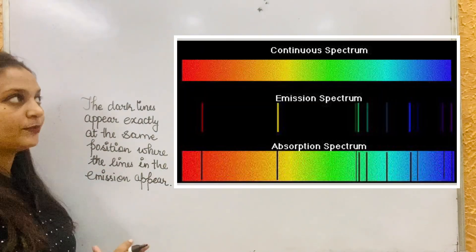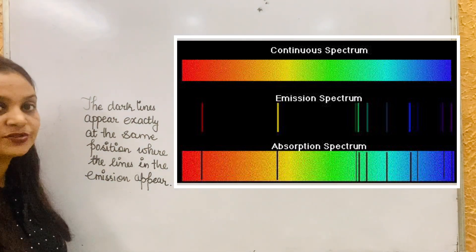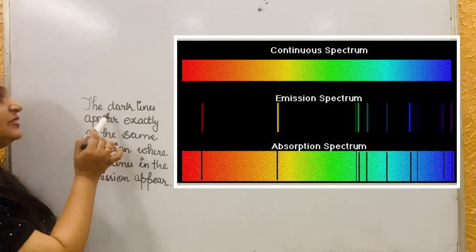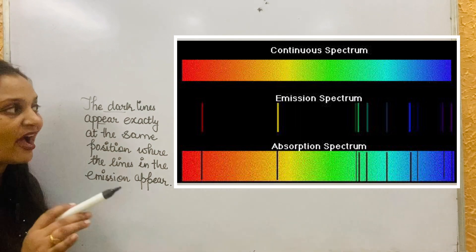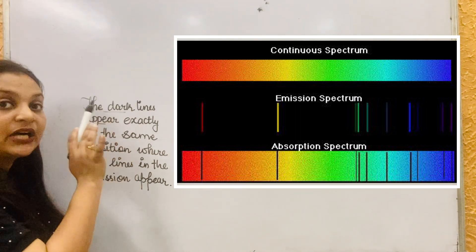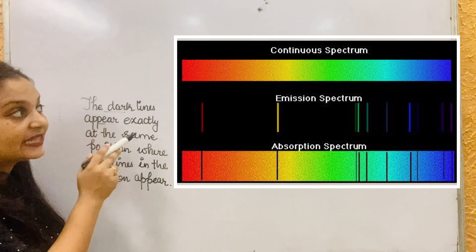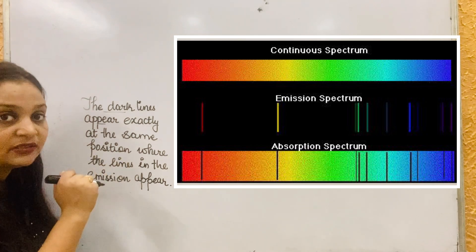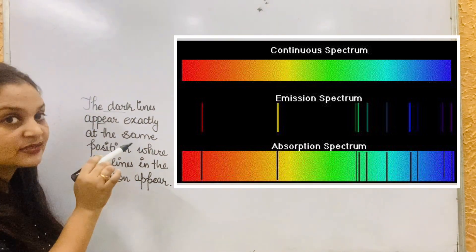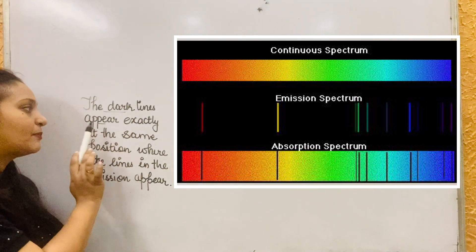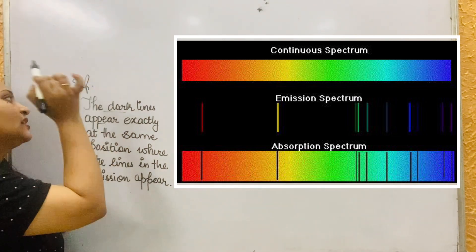For better understanding, I have placed all three spectra — the continuous spectra, the line spectra, and the absorption spectra — at the same position for comparison. You can observe that the dark lines in the absorption spectrum appear exactly at the same position where the lines in the line emission spectrum appear. In the continuous spectrum, colors overlap with no gap. In the line spectrum, lines are observed at particular wavelengths. And correspondingly in the absorption spectrum, dark lines appear at those same positions. This is a very important point — note it in your notebooks.